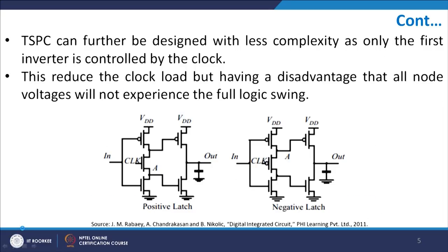In the positive latch with reduced clock nodes, when clock is high the two transistors are shorted and out equals in-bar. When they are open, the original output value is stored. The advantage is reduced clock load, but the disadvantage is that a full swing output is not available since the last inverter stage is removed. This is the fundamental tradeoff in this reduced clock load approach.